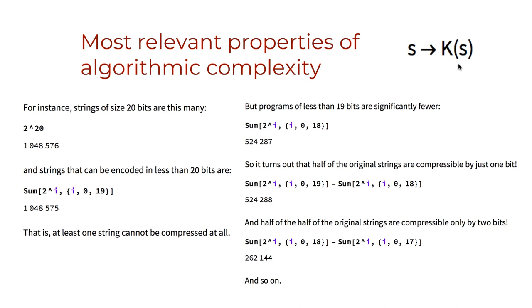That means that one cannot pair all n-length binary strings with binary programs of much shorter length because there is simply not enough short programs to encode all strings in shorter strings, even under optimal circumstances.